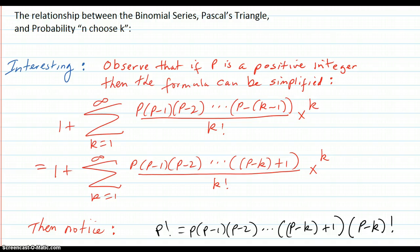So this is interesting. Observe that if p is a positive integer, then the binomial series formula can be simplified. So first we start off with this, that's what it was. Then all we did to go from this step to this step is to rewrite this, distribute it into negative, and get this.